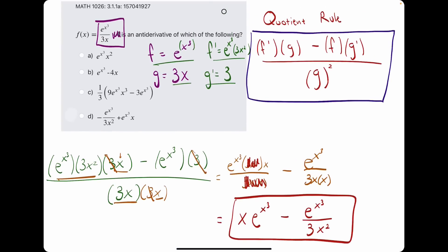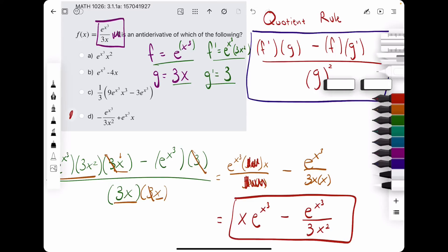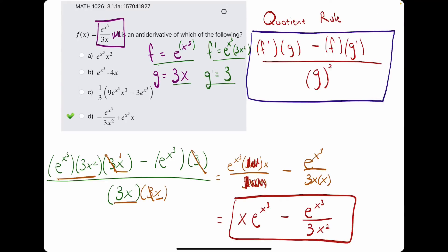So, we're looking for these two terms, and it appears they've written it in a backwards order, which is okay. Let's break out the eraser to see that d is our answer.